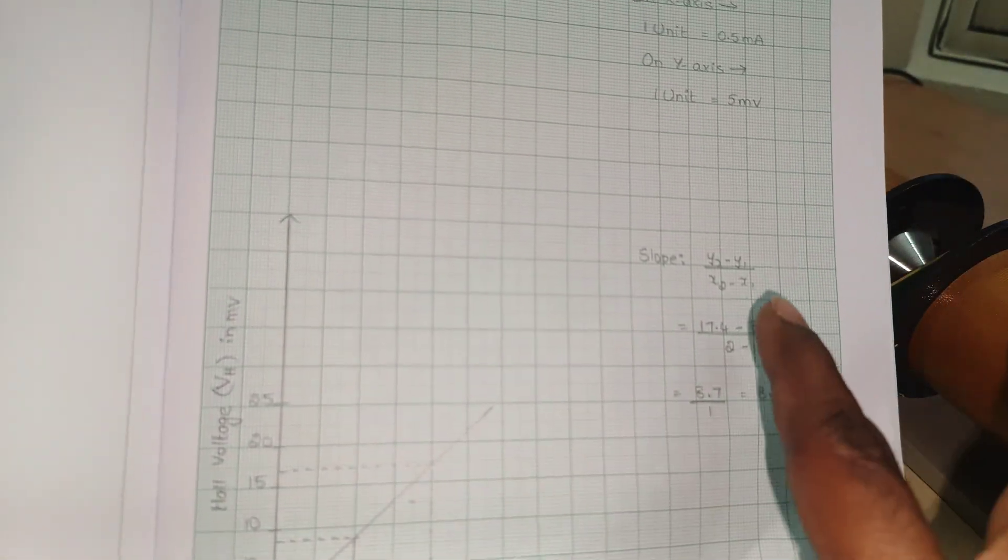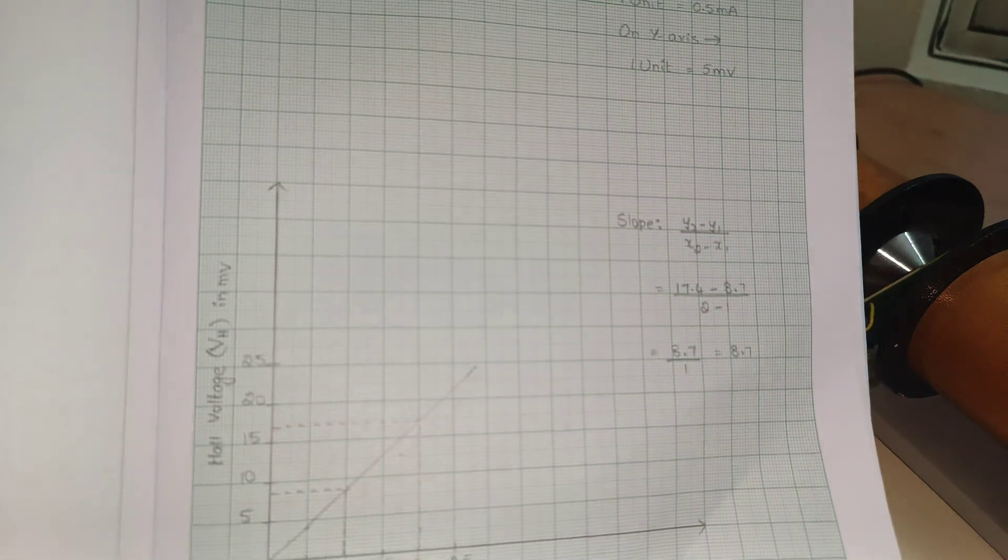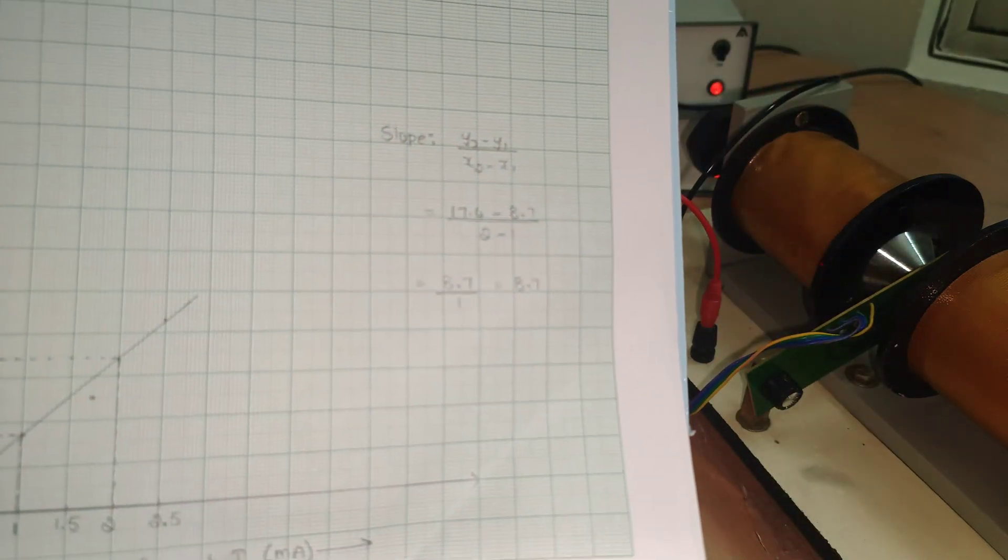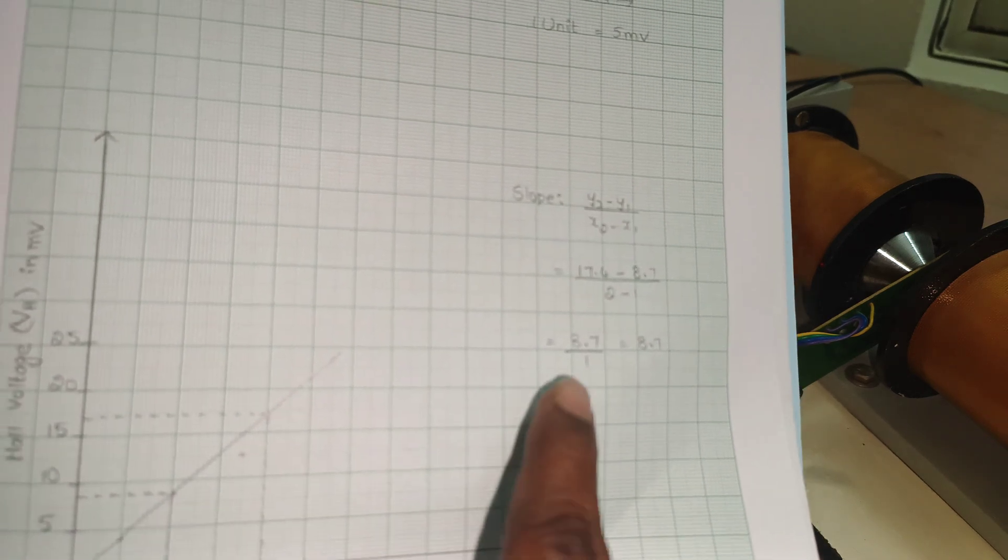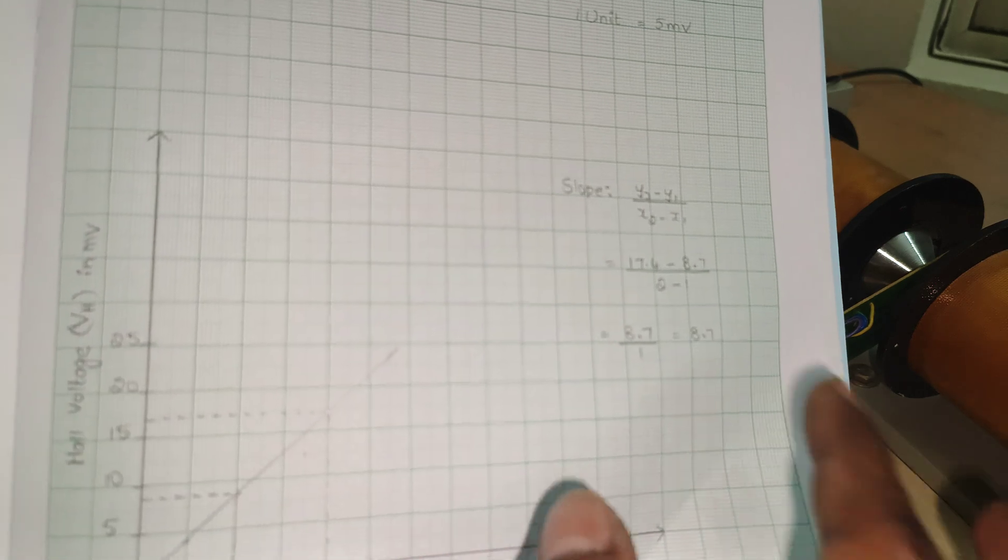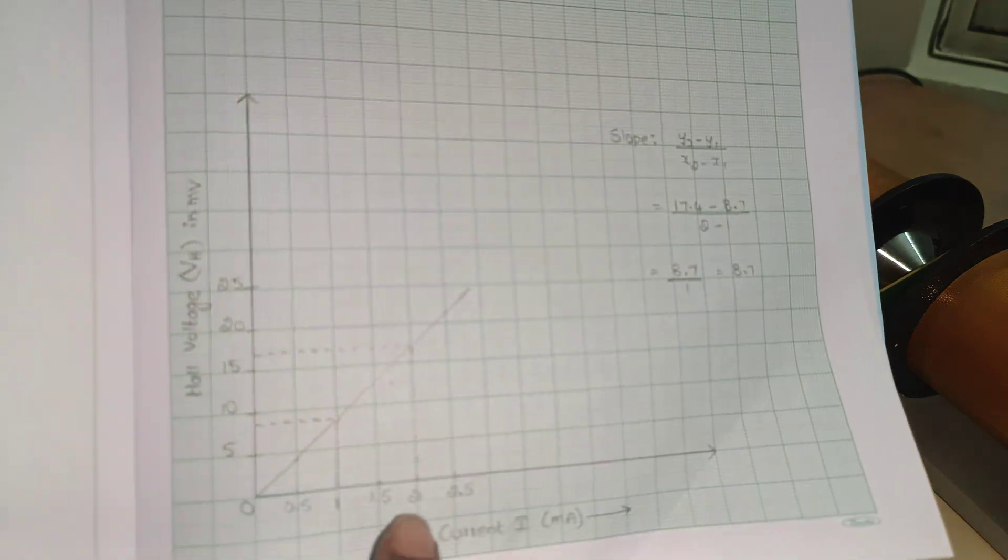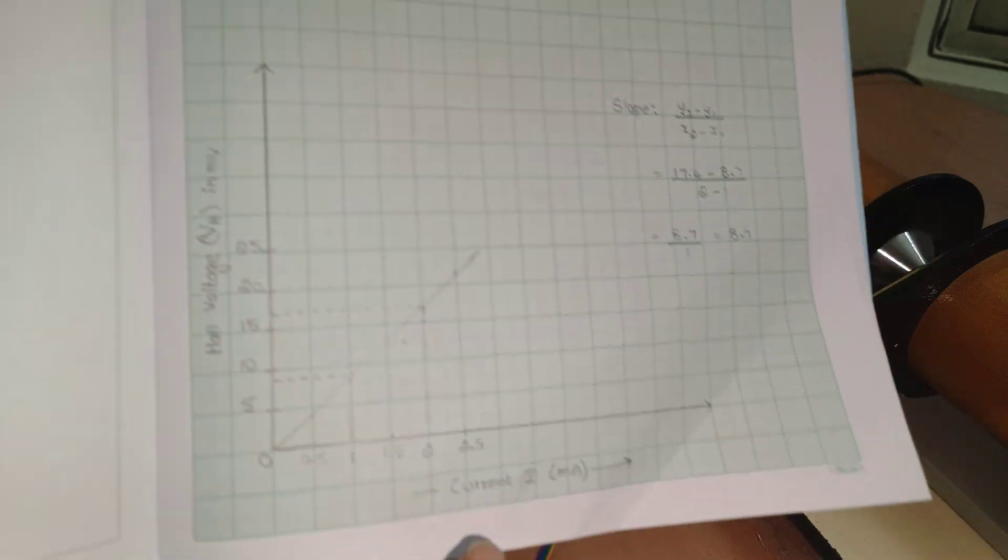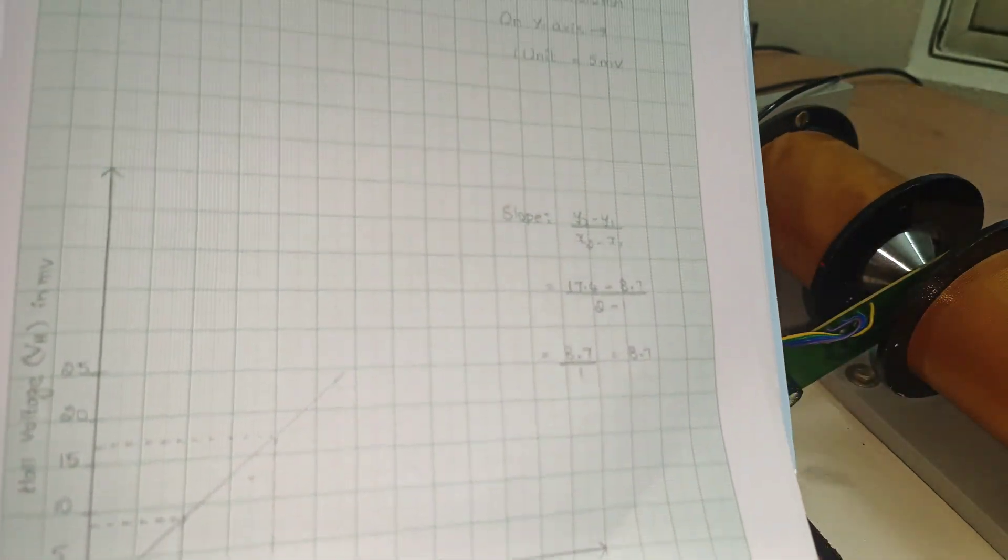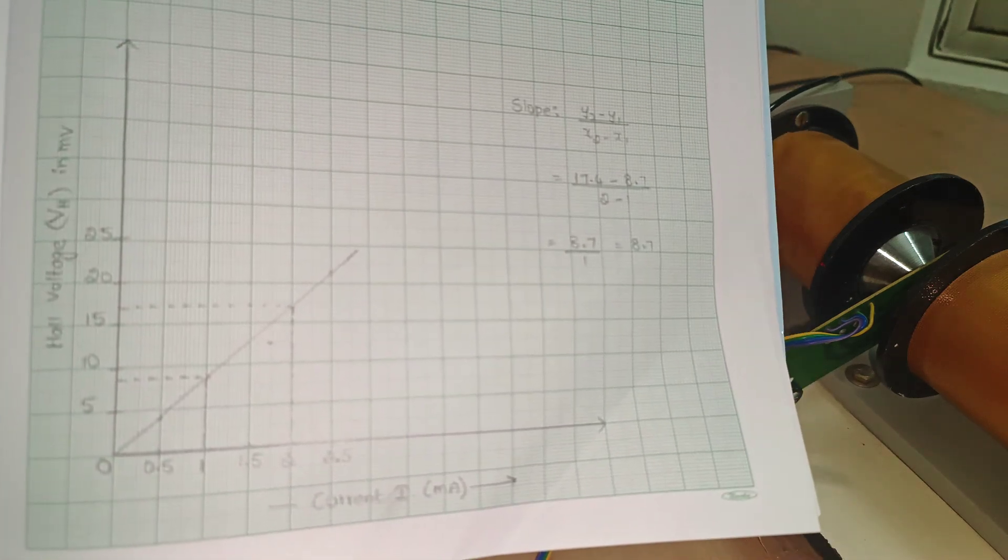Then after we can find out the slope. Slope of this line is y2 minus y1 by x2 minus x1. Take any two points. The difference should be 1, then it is easy for calculation. So that's why I considered 2 and 1. From there, y2 minus y1, x2 minus x1. Here we have 8.7 is the slope. Now I will show you the calculation.